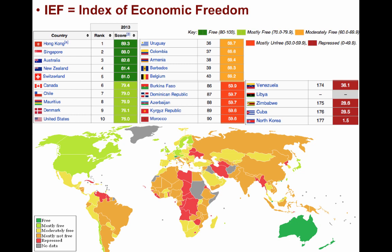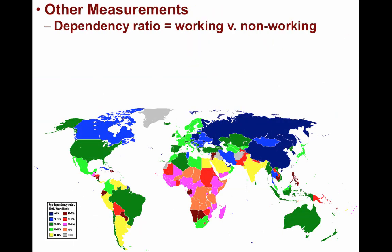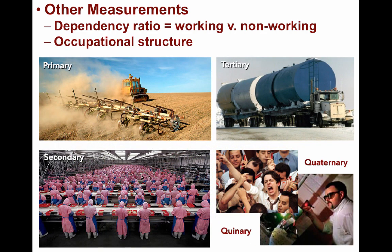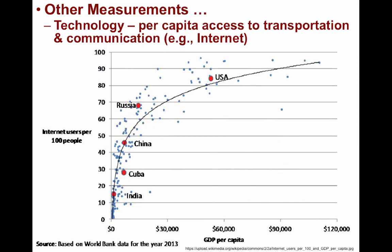There are many other measures as well. For example, the dependency ratio is an age-population ratio of those not typically in the labor force — the dependent part — versus those in the labor force — the productive part. It's used to measure the pressure on the productive population; the greater the dependency ratio, the worse it is for the economy. Another measure is the occupational structure: what percentage are primary, secondary, tertiary, or quaternary will tell you how developed the country is. We can also measure a country's relative technology — per capita access to affordable transport such as rail or road, and communications such as internet access. This graph shows the number of internet users per 100 along with GDP per capita, and you can see a high correlation between internet access and wealth.